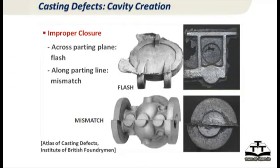Let us look at cavity creation defects. If the cavity is not closed properly, you get two kinds. One is flash — where the two mold halves are not meeting properly across the parting plane. The other is mismatch — where the mold halves are meeting but sliding across each other along the parting plane. Both are illustrated here.